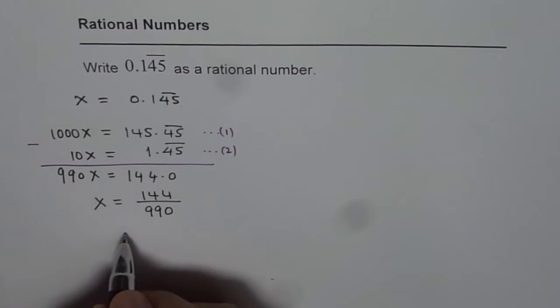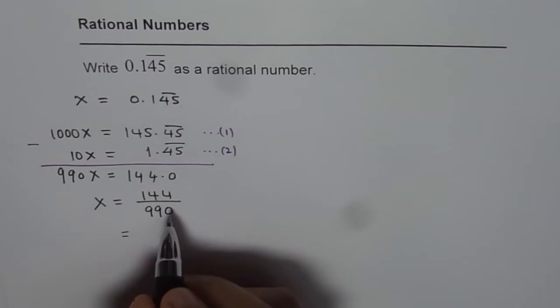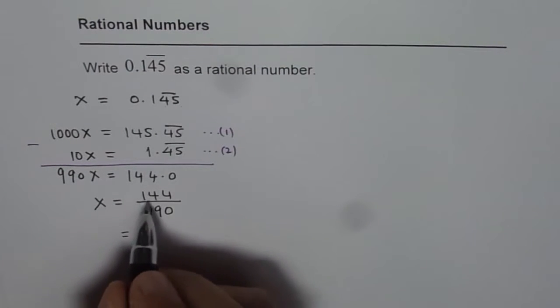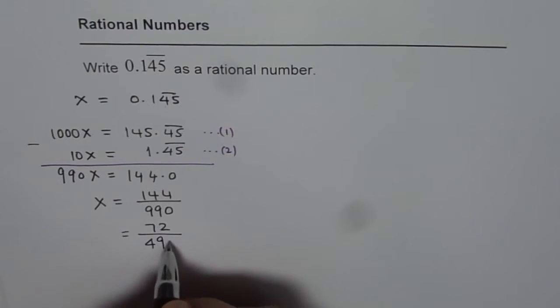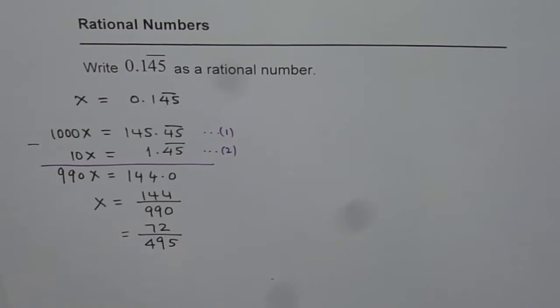Both are even numbers so we can divide them both by 2. So dividing by 2 we get 72 in the numerator and in the denominator 495. So that becomes the rational number equivalent to the given recurring decimal number.